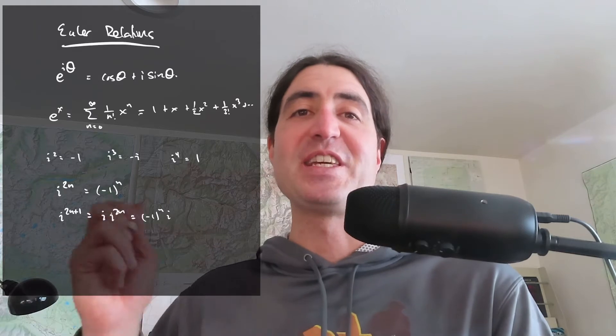Let us begin by observing that i squared equals minus 1 by definition. Therefore i cubed equals i squared times i, which is minus 1 times i, which is minus i. And i to the fourth equals minus 1 squared, which is just 1. So what we've learned is: i to an even power is the same as minus 1 to that power, and i to an odd power equals i times i to an even power, which is minus 1 to the n times i. Even powers of i are always real; odd powers of i are always imaginary.